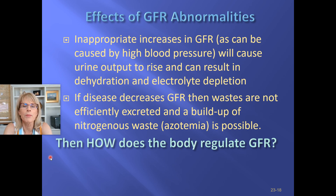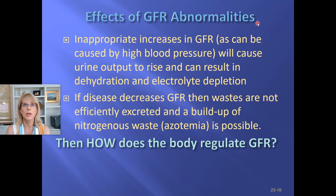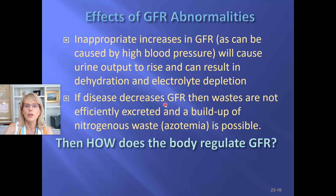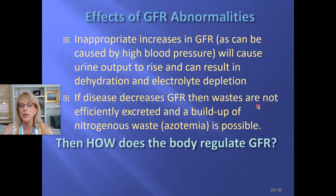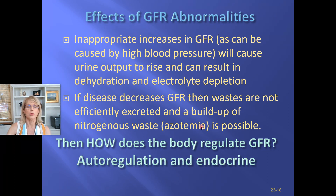Here's where we left off — we were talking about GFR abnormalities. If the GFR is too high, we can end up becoming dehydrated because we're losing too much fluid in urine, and we can also end up with an abnormal ratio of sodium, potassium, and calcium. If it's too low, waste doesn't get efficiently excreted. When someone's blood pressure is low due to blood loss or dehydration, they get a buildup of nitrogenous waste called azotemia, which can progress to uremia.